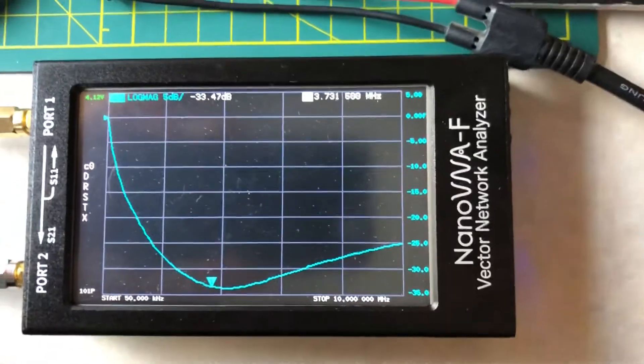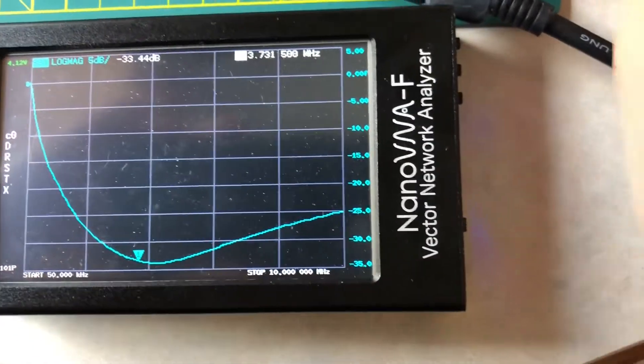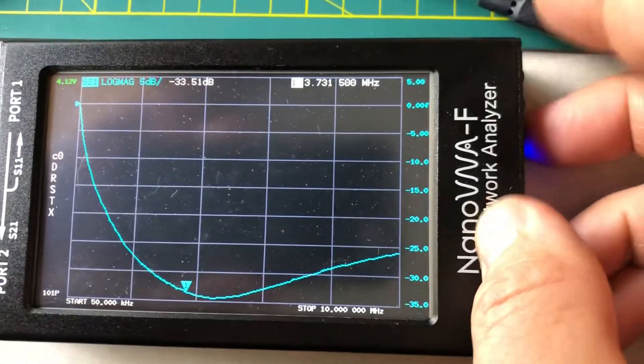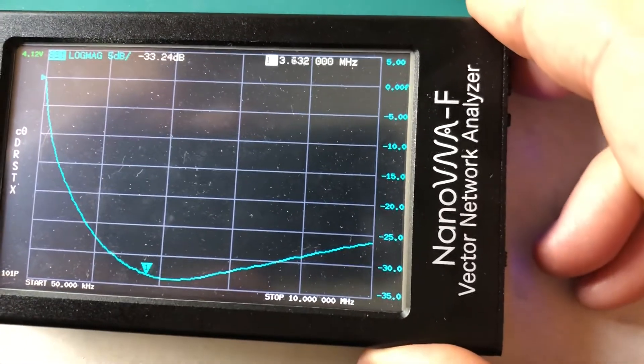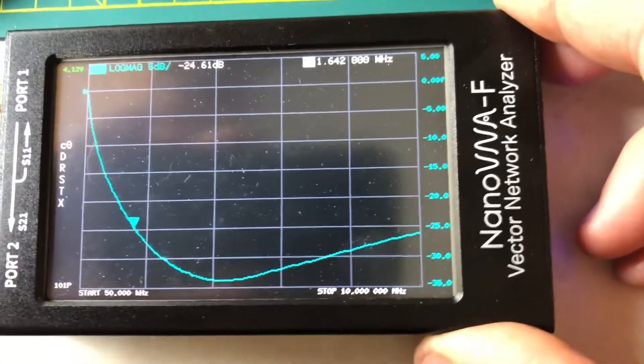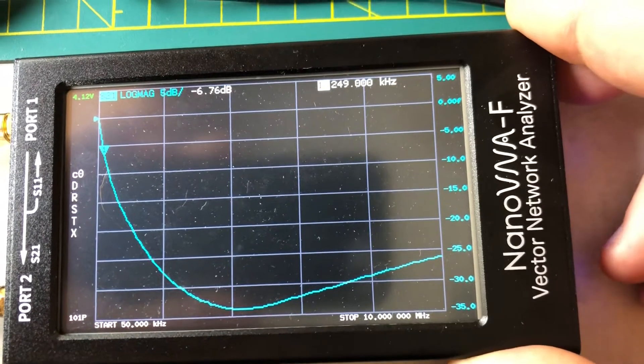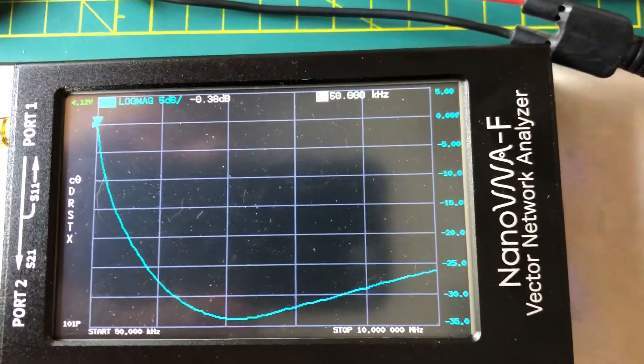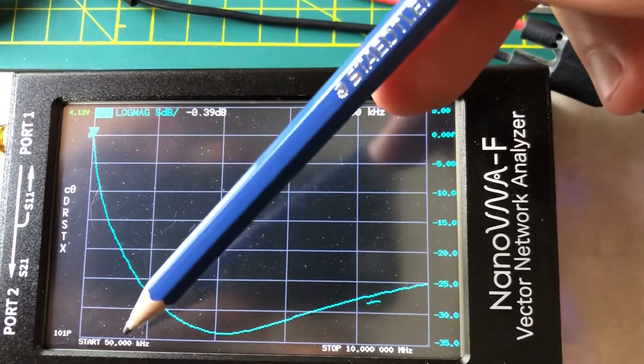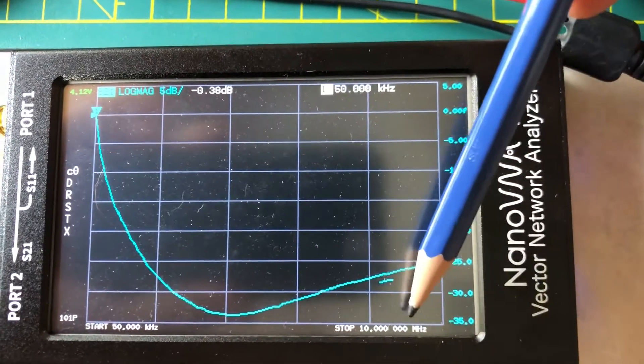If we look at the nano VNA, you can see, let's go here, sweep this down in frequency. You can see that it is actually rejecting the input signal, the common mode signal. Now down at 50 kilohertz, which is my lowest sweep, and I'm sweeping up to 10 megs.